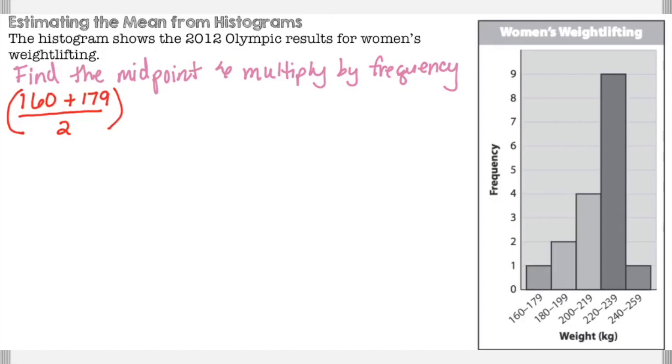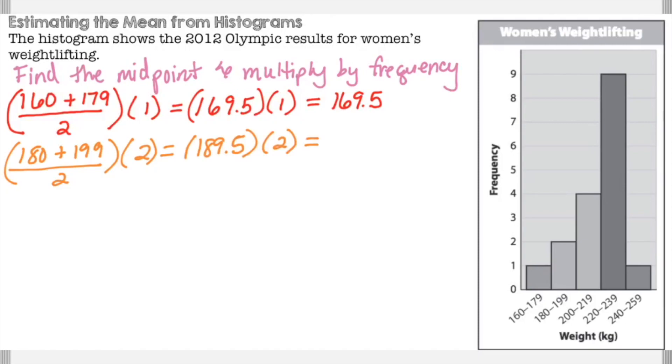For the first one, we take the range between 160 and 179, divide it by two, and the bar only goes up to one. So we multiply it by one. That equals 169.5. Then the second one, 180 and 199, divide by two, and that bar goes up to a frequency of two. 189.5 times two gives us 379.